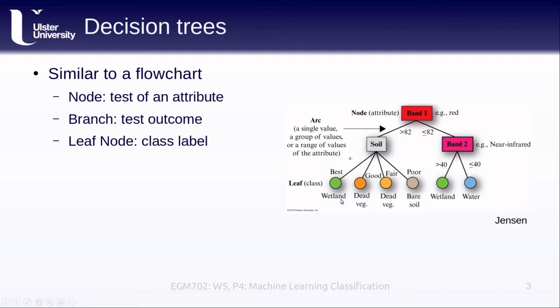And then finally, the leaf nodes are the final nodes where we actually have the class labels. So you can see here we have the wetland, dead vegetation, bare soil, wetland, and water that are being classified as we move through the decision tree.